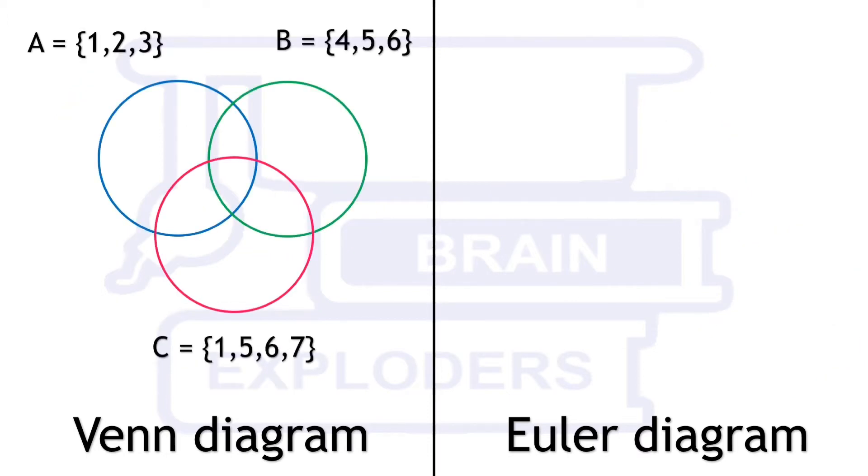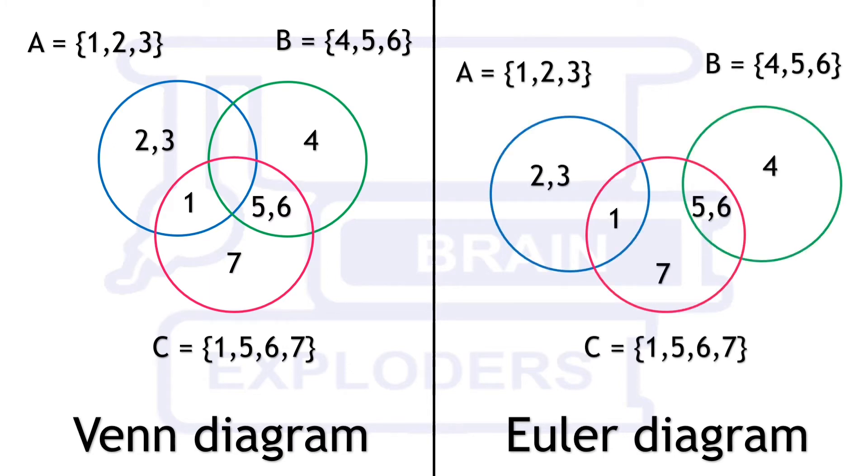Here is another example. Suppose there are three sets A, B, and C with these given elements in it. There is no common element between A and B. Even then, in a Venn diagram A intersection B can be seen, but that is an empty set. In Euler diagrams, only those intersections are shown which have at least one element in them.